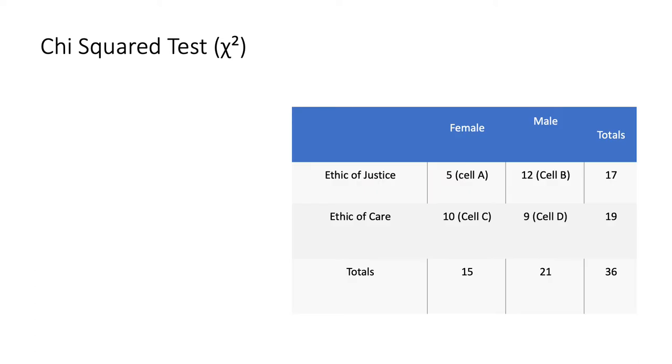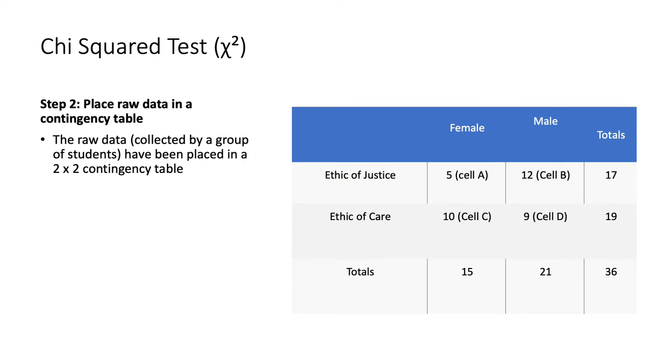Step one, which you had practice with in the previous exam question that I set, is to, sometimes you'll be asked to draw a contingency table. Sometimes it will be done for you. But have a look at this contingency table. It's usually a two by two. So you can see female and male and then ethic of justice and ethic of care. And all they have done is they've tallied the number of people that fit into each cell. So five females had an ethic of justice when making moral decisions. Ten females had an ethic of care. Twelve males had an ethic of justice and nine males had an ethic of care. And then all they've done is they've given you the totals for ethic of justice, ethic of care, total number of females, total number of males. And then 36 is the total number of all participants.